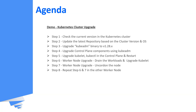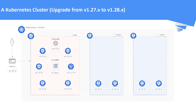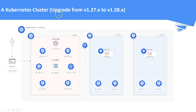This is our existing Kubernetes cluster with one master and two worker nodes. Our application is running as a deployment with two replicas. From this picture we can see that the Kubernetes cluster is running in version 1.27.6. In this video we are going to upgrade our cluster from version 1.27.6 to 1.28.4.